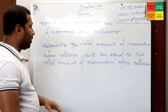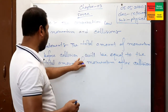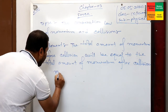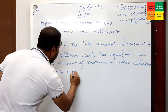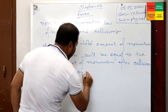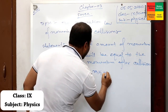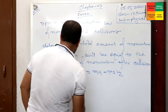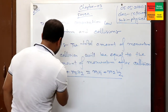Now, what will be the mathematical expression? Have a look. The total amount of momentum before collision — that means m1·u1 plus m2·u2 — will be equal to m1·v1 plus m2·v2. It is needed to show how you will get this.